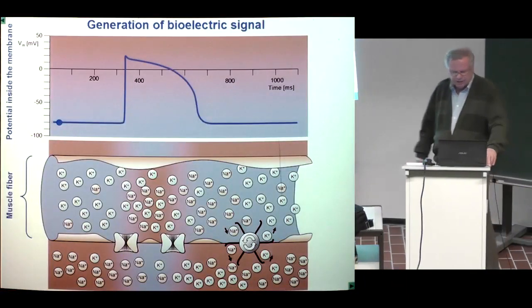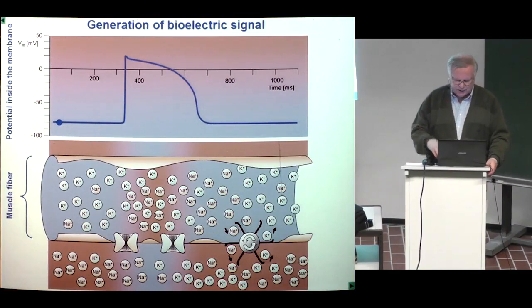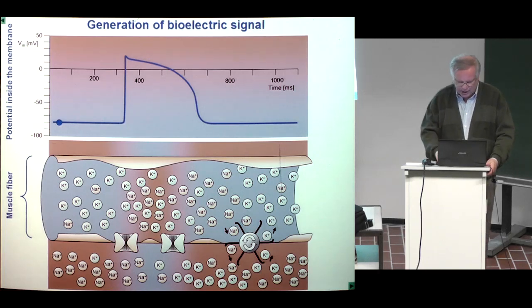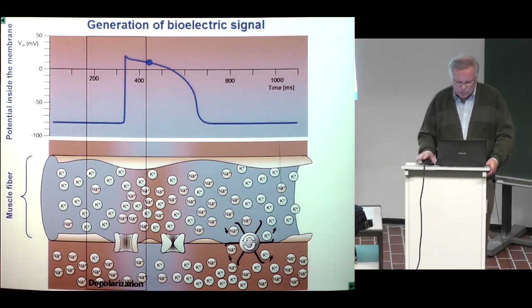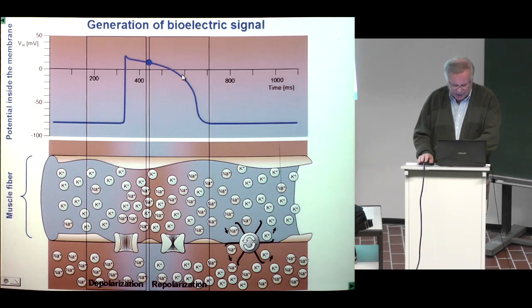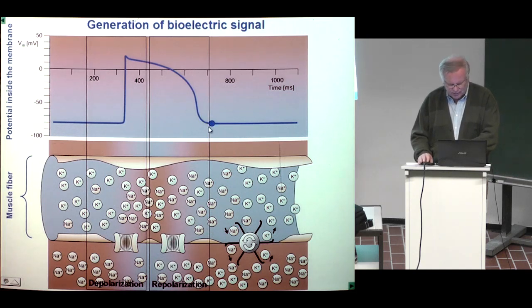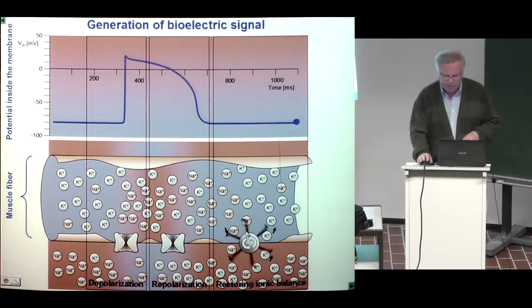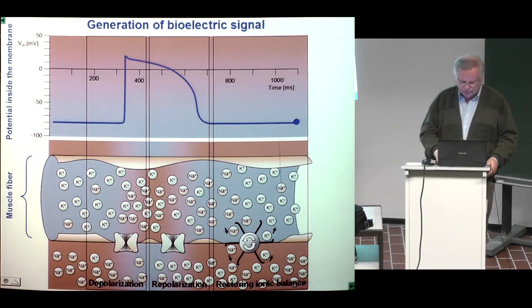I return to the generation of the bioelectric signal, shown here for the cardiac muscle. After the depolarization there is a so-called plateau phase. This is a real time scale for cardiac muscle of the frog. There is a quite long time when the cardiac muscle cell is depolarized, and then repolarization takes place — the potassium ions are flowing out, the potential inside the cell returns to the resting state, and the sodium-potassium ion pump restores the ionic balance.